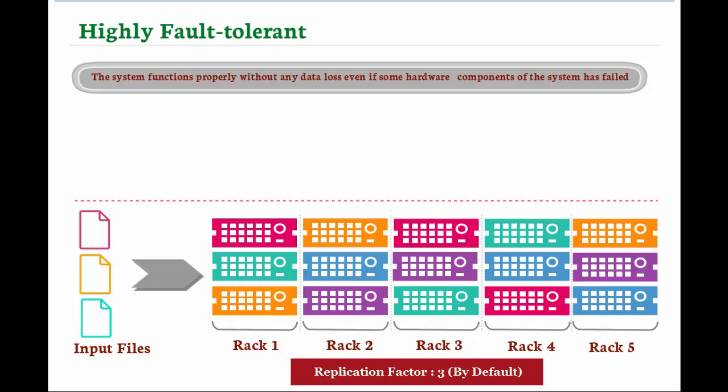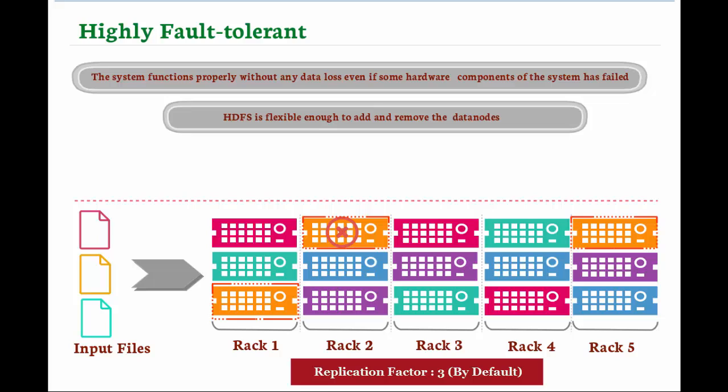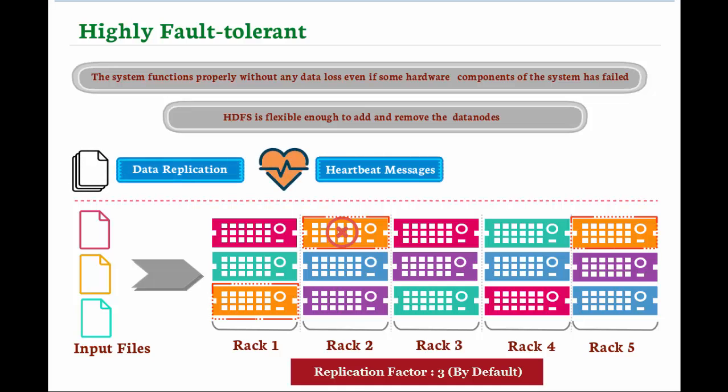If a data node goes down, the client can read the data from other two data nodes, hence preventing the entire cluster from going down and achieving fault tolerance. HDFS is flexible enough to add and remove data nodes with less effort in a cluster. There are three ways HDFS can achieve fault tolerance: data replication, heartbeat messages, and checkpoint and recovery.